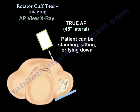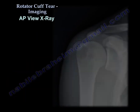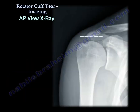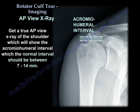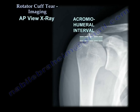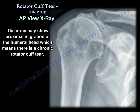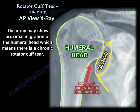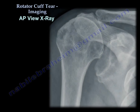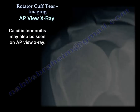We will get x-rays for the patient. We will get a 2-AP view, which will show us the acromiochumeral interval, which is about 7 to 14 millimeters. The x-ray may show proximal migration, which means a chronic cuff tear. It can also show calcific tendinitis.